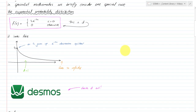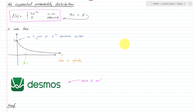In math methods you've recently considered probability density functions. Now we're going to consider one special case: the exponential probability distribution. It's written as f(x) equals λe to the negative λx where x is greater than zero, or zero otherwise. Lambda is the y-intercept, and because it's exponential with a negative k value it slowly creeps towards zero.